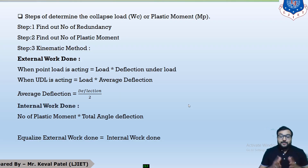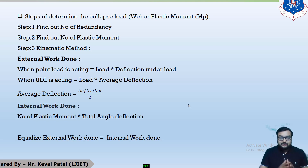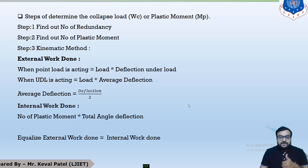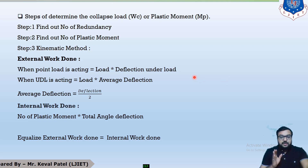Hello everyone. In the last lecture we discussed how to analyze a beam. It was already discussed that whenever we have to analyze any beam, we have two methods: the first one is the static method and the second one is the kinematic method. It is already discussed that the kinematic method is in our syllabus, so we will discuss steps of determining the collapse load or plastic moment with the help of the kinematic method.